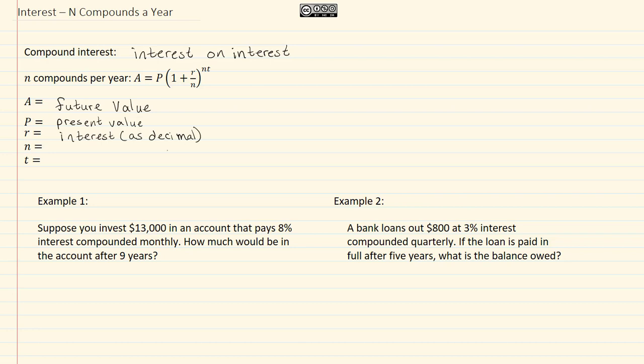n is the number of times or compounds in a year, and t is the number of years.